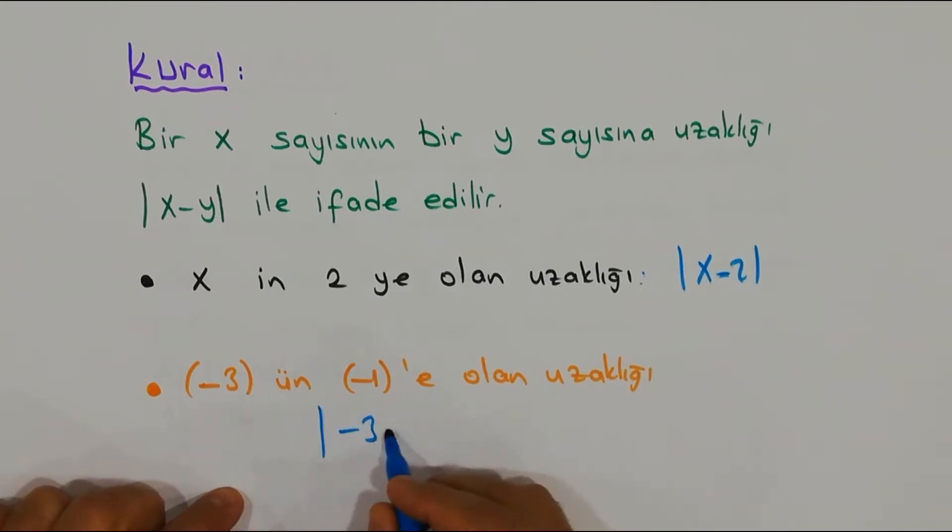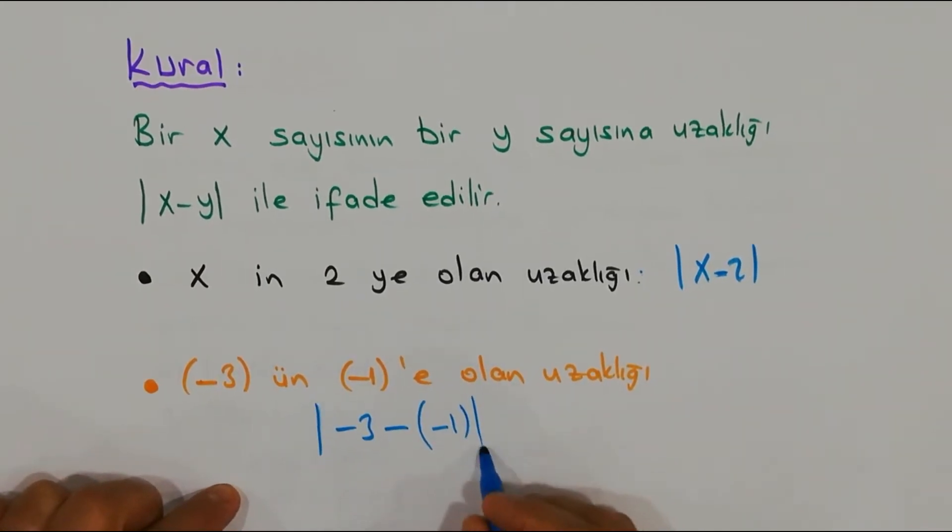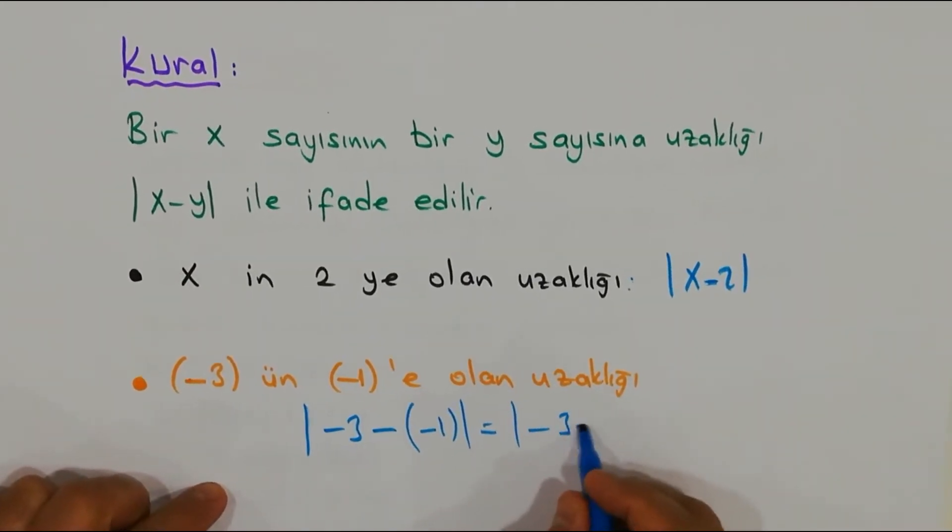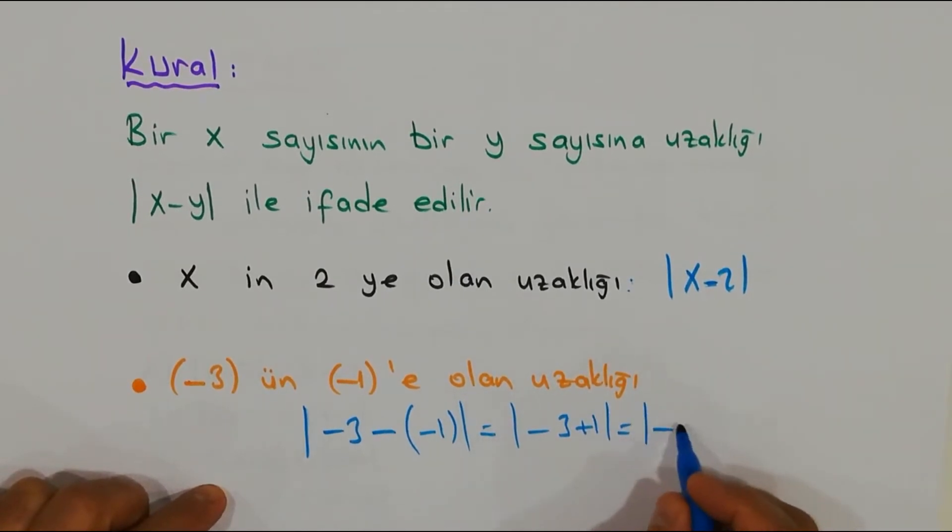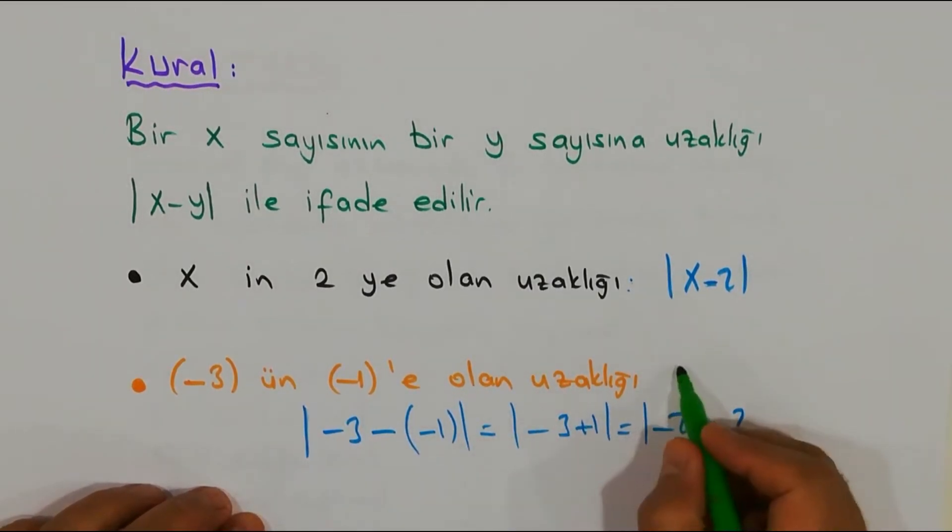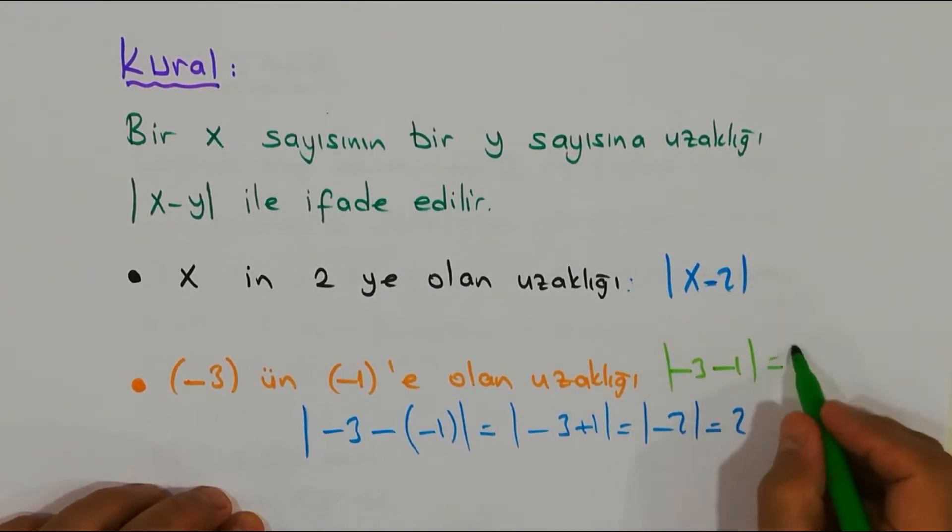Şimdi burada işlenen bir cinayeti sizinle paylaşayım arkadaşlar. Öğrenci arkadaşlarımın bazen yaptığı bir hata, o da şu: |x-3|'ün |x-1|'e olan uzaklığı. Şunu diyor: |x-3|, |x-1|. Arkadaşlar, bu faciadır değil mi? Öyle bir şey olmaz.